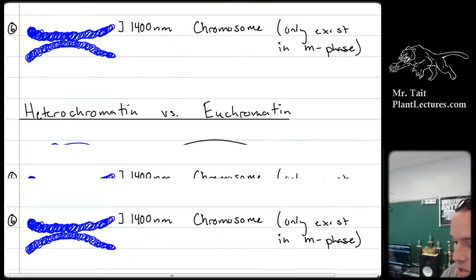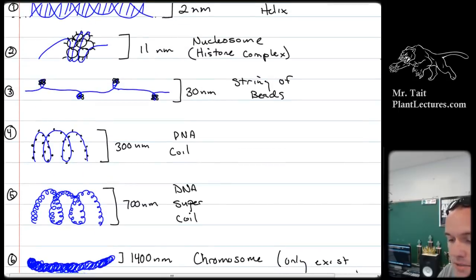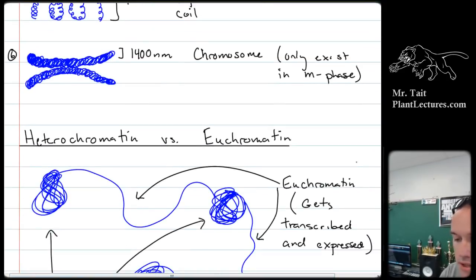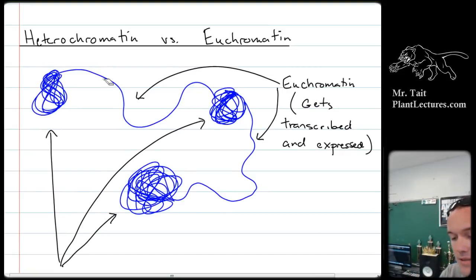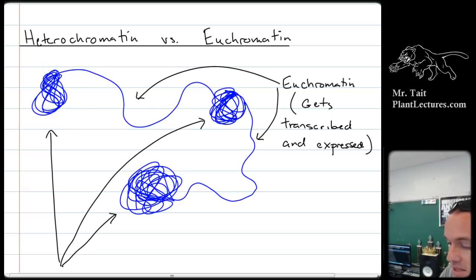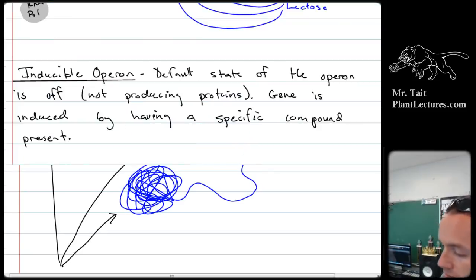Chromosome structure — chromosomes only exist in their fully wrapped state in mitosis. Most of the time they're in a form where there are some spots that are really condensed and lots of spots that aren't. This is called euchromatin versus heterochromatin. Euchromatin is the part that's not super condensed — it gets expressed. Heterochromatin is the part that is super condensed and does not get expressed. Heterochromatin is caused by DNA methylation and histone acetylation, which basically causes the DNA to clump up on itself.